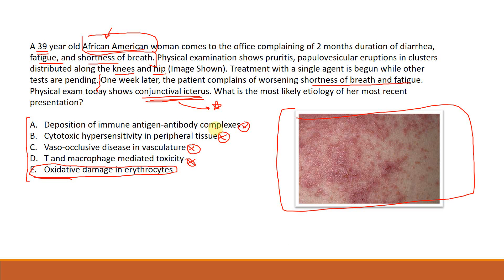The major takeaways from this problem: note the patient's age and consider why it matters. If race or ethnicity is given, always ask yourself why — it's not accidental. Know the timeline of events: acute, chronic, or acute-on-chronic. Try to explain the constellation of symptoms using Occam's razor — arrive at one explanation. Take note of physical exam findings and see how they fit your hypothesis.